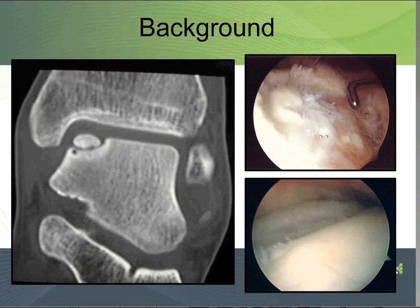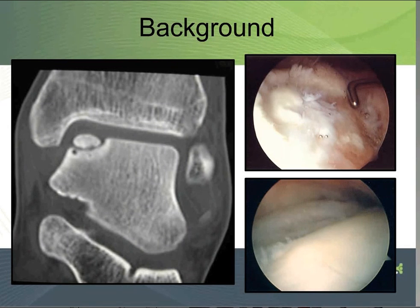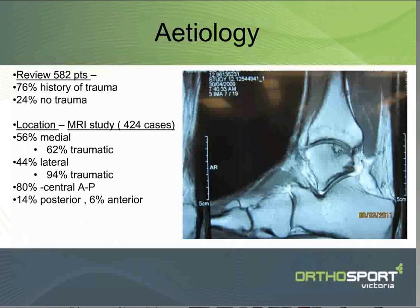That's what you get at arthroscopy where the surface is covered up with some fibrocartilage. Or in this case, the whole fragment is loose and I've actually removed a piece of loose condyle tissue.